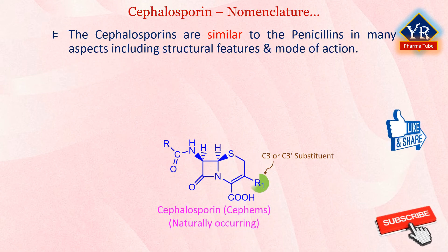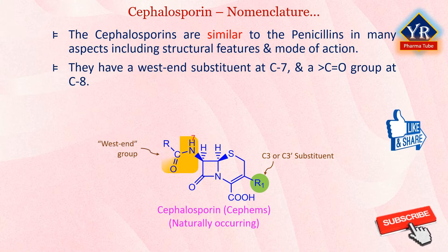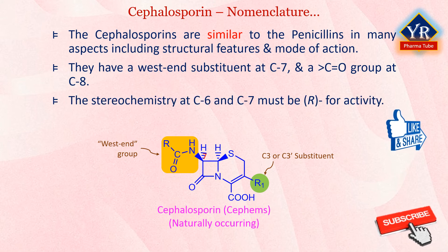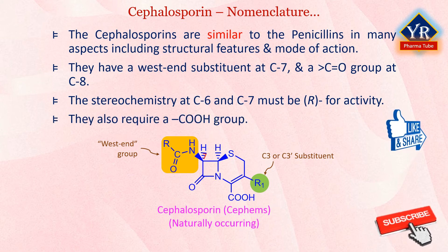The cephalosporins are similar to the penicillins in many aspects, including several structural features and mode of action. Like the penicillins, the cephalosporins have an important acyl substituent joined by an amide linkage to the Cepham C7 amide center, and the C8 center contains the beta-lactam carbonyl center. The stereochemistry of the cephalosporin C6 and C7 centers must be of the R designation for antibacterial activity, and this spatial disposition is analogous to that of the penicillins. Like the penicillins, the cephalosporins also require a carboxylic acid group for activity, attached to the C4 position.